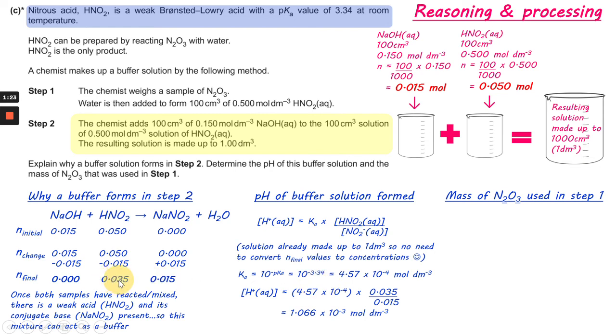Like we said, these numbers here can be used as concentrations. So for the HNO2, that goes in the top. And for the NaNO2, that goes underneath, which gives us 1.066 times 10 to the minus 3. Now the next thing we've got is pH equals minus log of the hydrogen ion concentration. So that gives us 2.97.